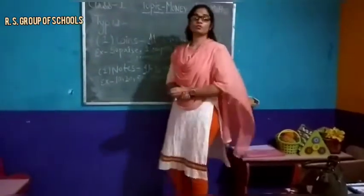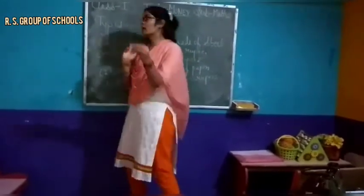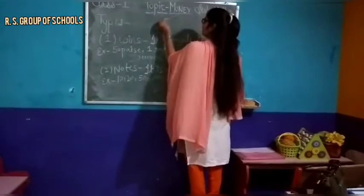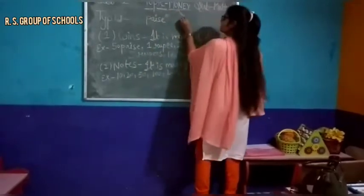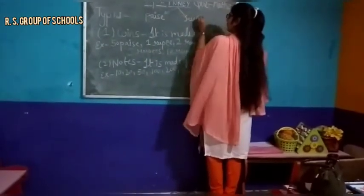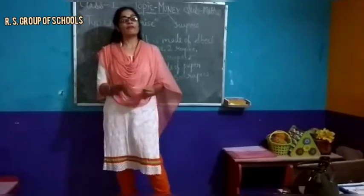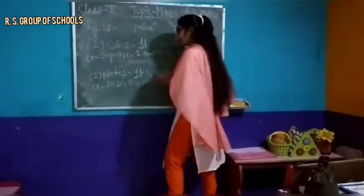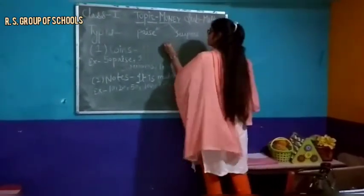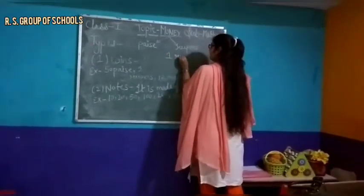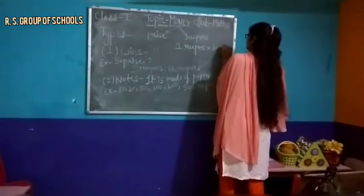Most important — students, money do types ke hote hai. Pehla hota hai paise, aur second one is rupees. Indian currency ka name rupees hai. One rupee mein hundred paise hote hai. One rupee mein kitne paise hote hai? Hundred paise hote hai — ye most important cheez hai, dhyan rakho.